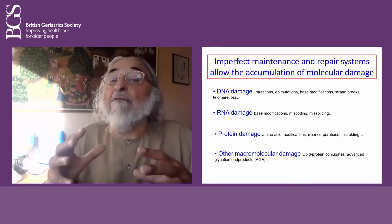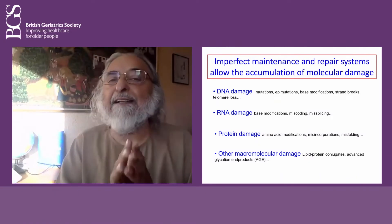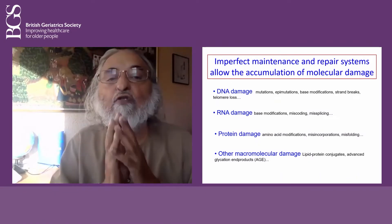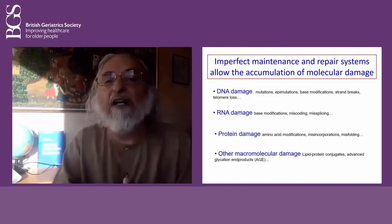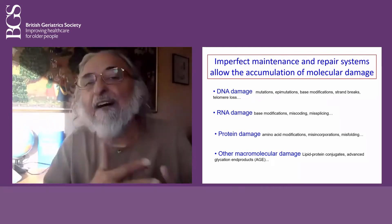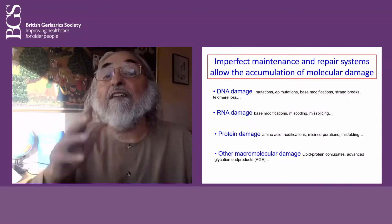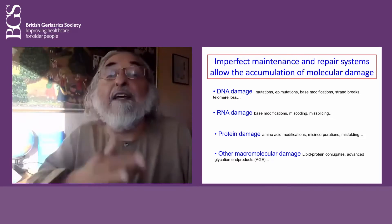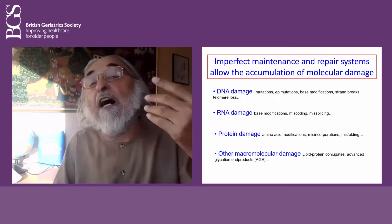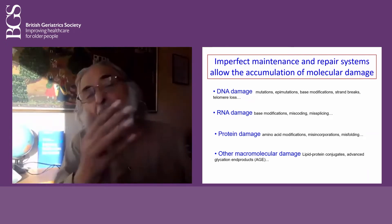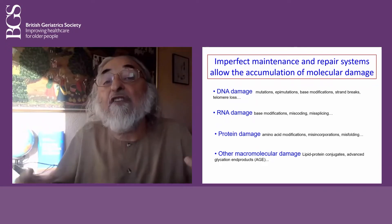Why does it happen? Imperfect maintenance and repair systems. Evolution does not work on perfection — it works on what works for essential lifespan. There is no example in evolution where things are perfect; if things were perfect, there would be no evolution. So DNA damage, RNA damage, protein damage, and other macromolecular damages are the reasons which cause this shrinkage. Those damages are occurring from day one, but they are less important for survival of the body at the species level.